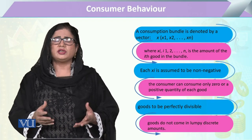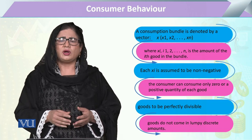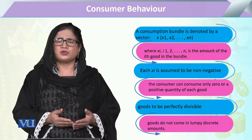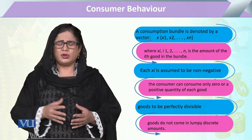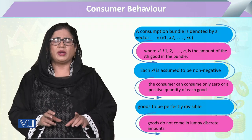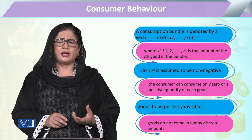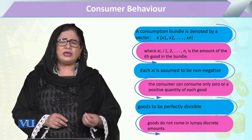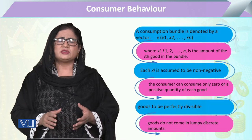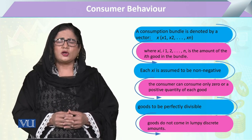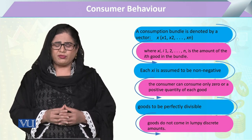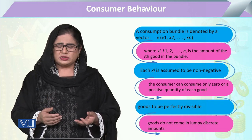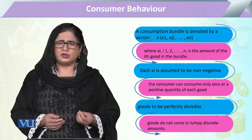Budget constraint کو ہم اس form میں لکھتے ہیں: price of x multiply by the commodity purchased plus x2 (all other goods) should be either equal to income (m) or less than income۔ Consumption bundle کو notation دیتے ہوئے، ایک bundle میں commodities x1, x2, x3 up to xn ہو سکتی ہیں۔ Bundle کا ہر member non-negative ہونا چاہیے — commodity کی quantity کا وجود لازمی ہے، اسے negative form میں استعمال نہیں کیا جا سکتا۔